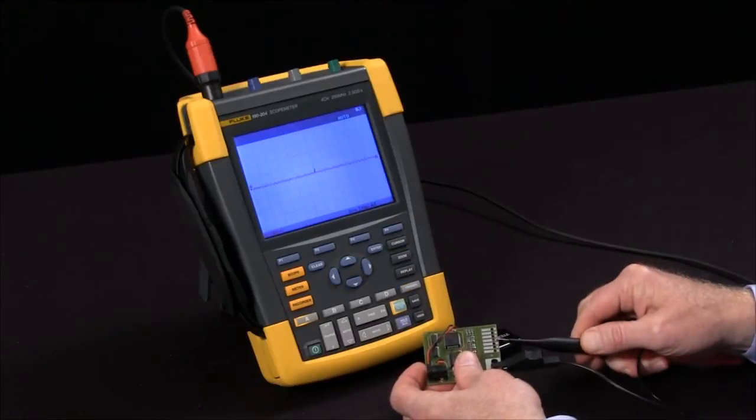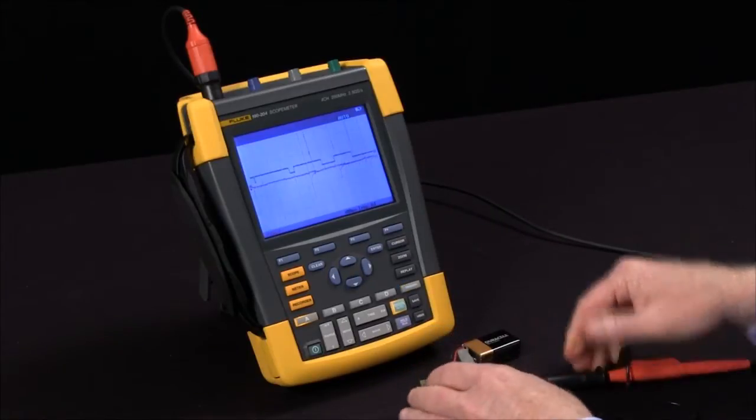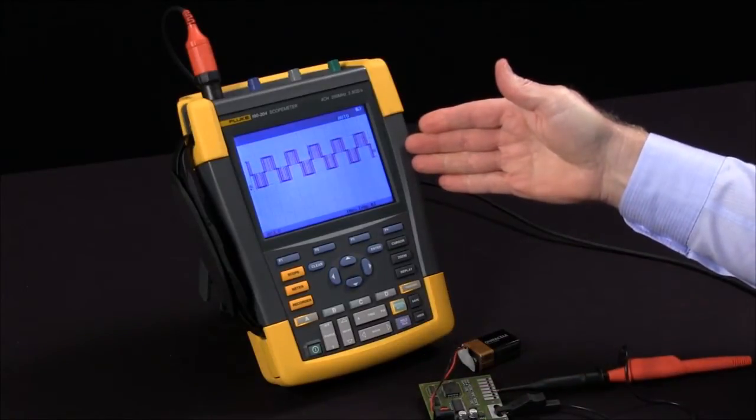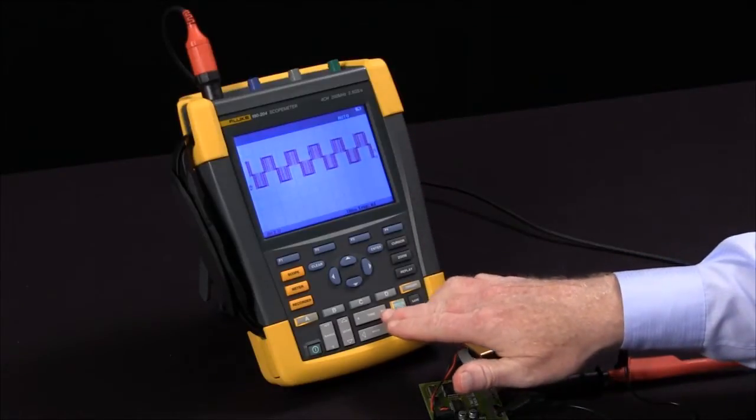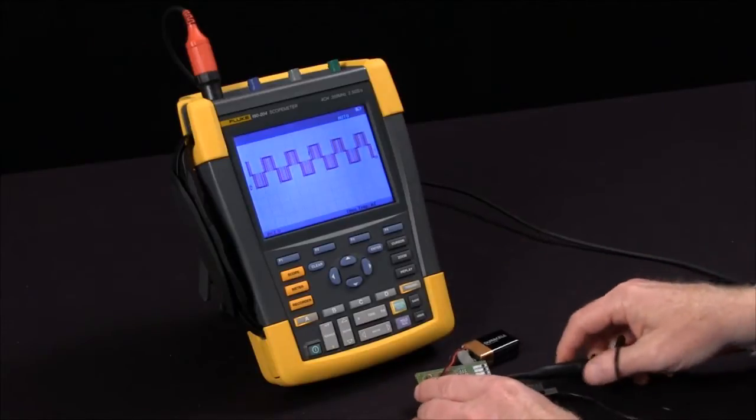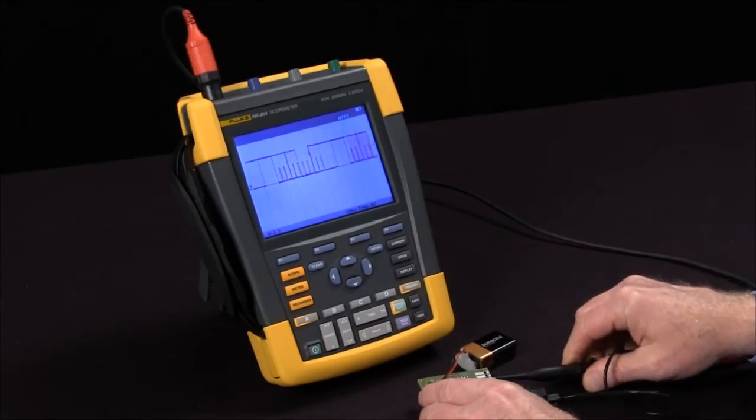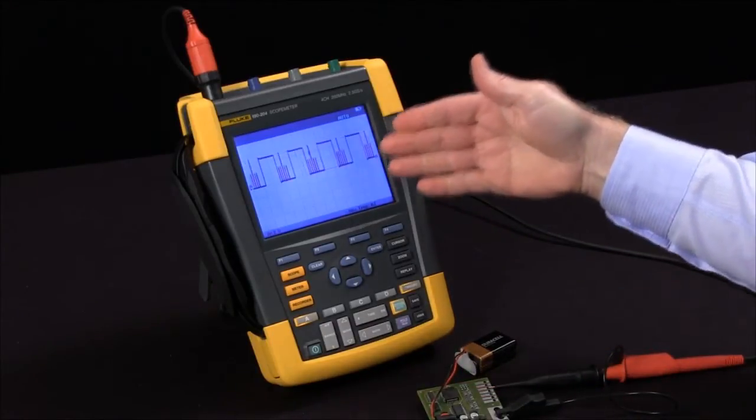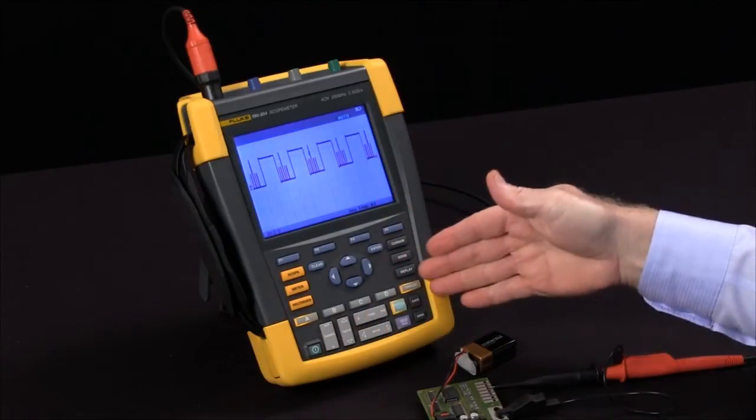Normally, when I connect my scope to a signal, it sets itself up automatically with the proper time base, attenuator and trigger to give me a stable display. As I change signals, you'll note the scope does everything with no need to push buttons.